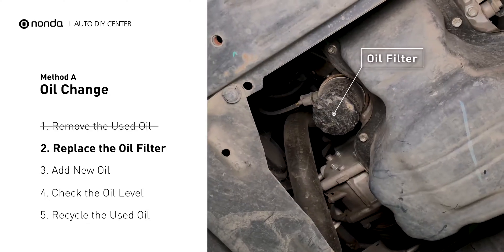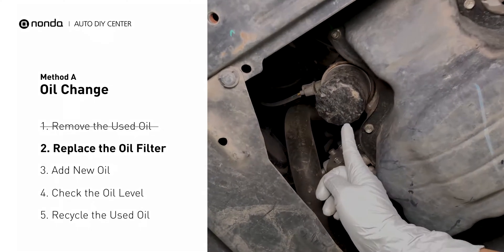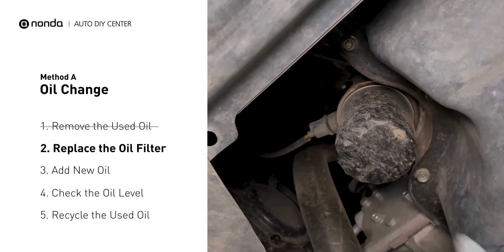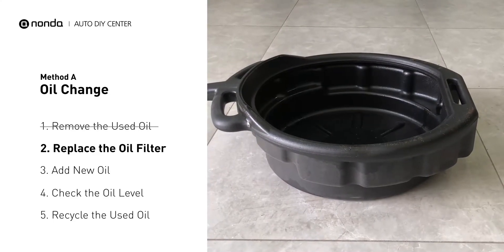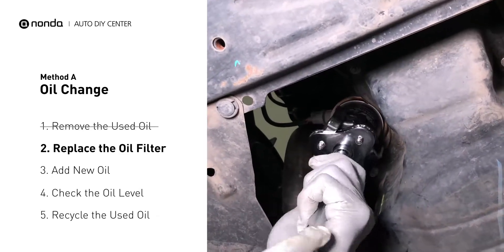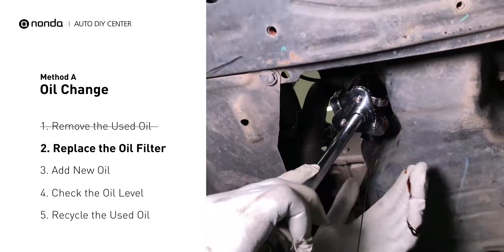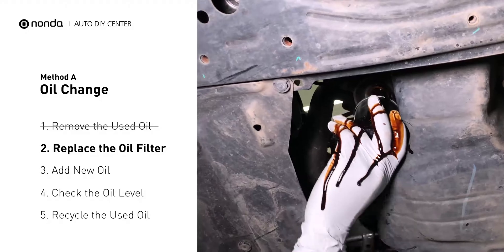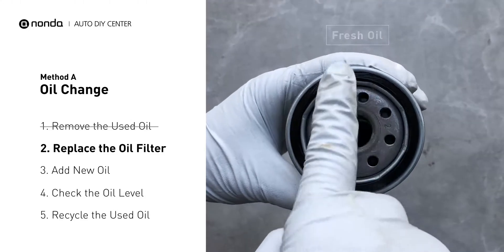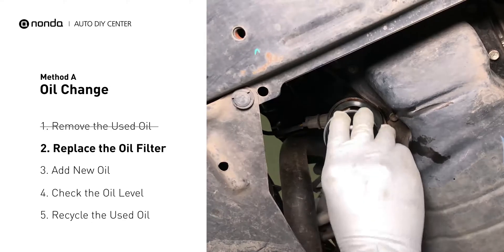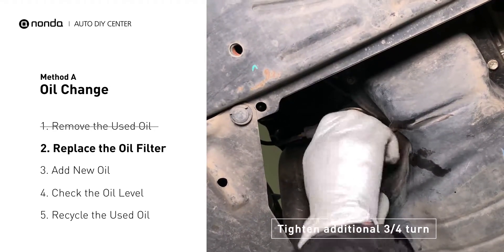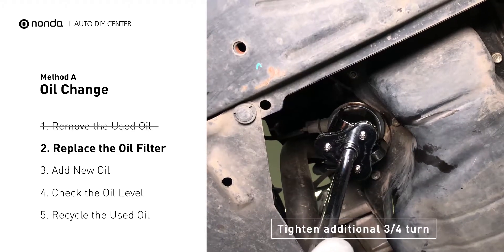The oil filter is usually located beside the oil pan, or under the hood of your vehicle near the engine. Place the collection pan under the filter. There would be oil in the filter itself that could be hot, so it is important that the oil goes into the collection pan. Spread a bit of fresh oil evenly on the new filter's gasket. Then install the new oil filter. Tighten the filter an additional three quarters of a turn. Be sure not to over tighten.